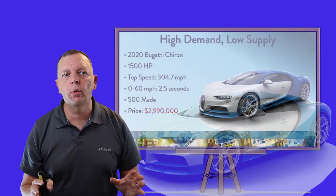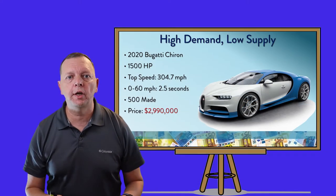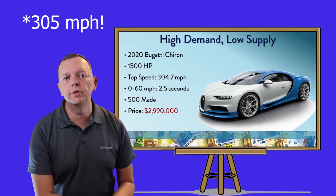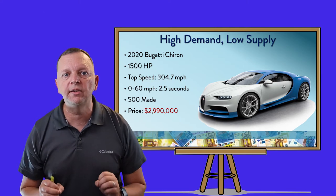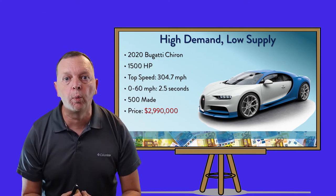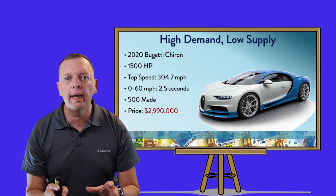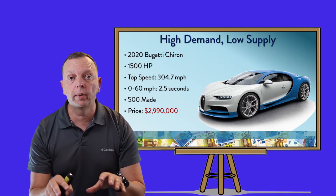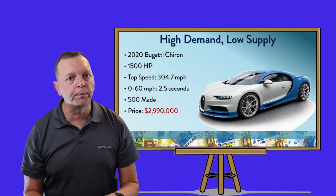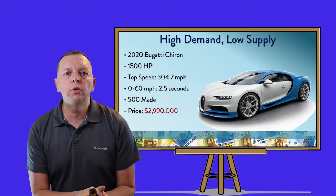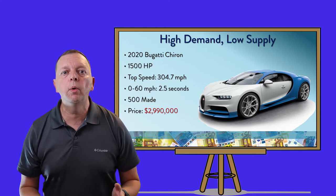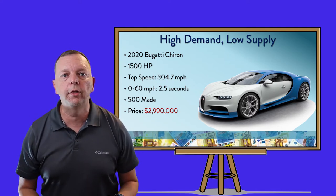For example, let me point out the 2020 Bugatti Chiron. It looks pretty great — it has 1,500 horsepower, a top speed of almost 105 miles an hour, and can go from zero to 60 in 2.5 seconds. I want one. The problem is there were only 500 of these made. And because you have a great amount of demand but very little supply, to get into a base model of one of these will cost you nearly $3 million.